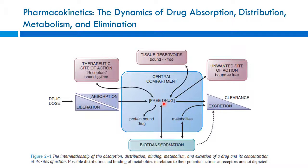Where do we excrete drugs typically? Usually in the urine. Other places? Feces. The biliary tract is important for eliminating drugs into the GI tract, and they can then be eliminated in the feces. Those are the two main routes.